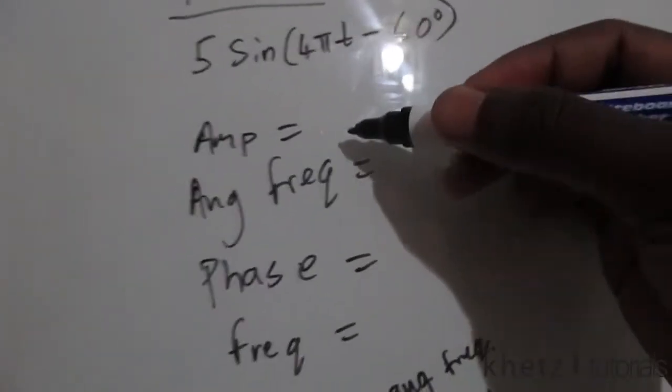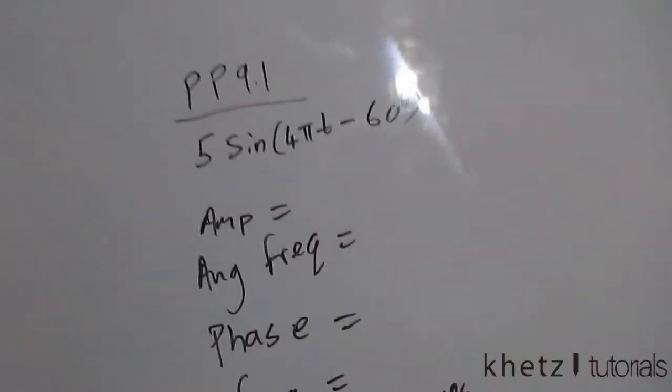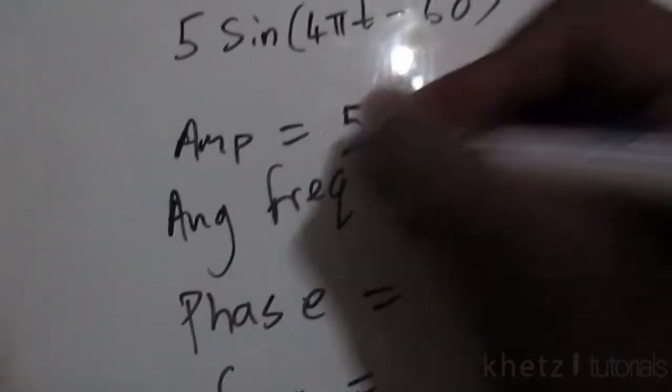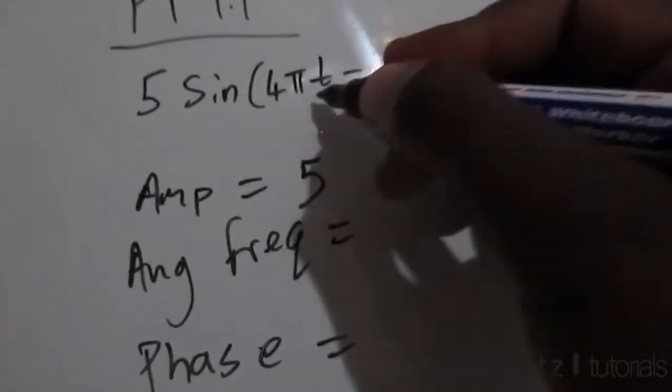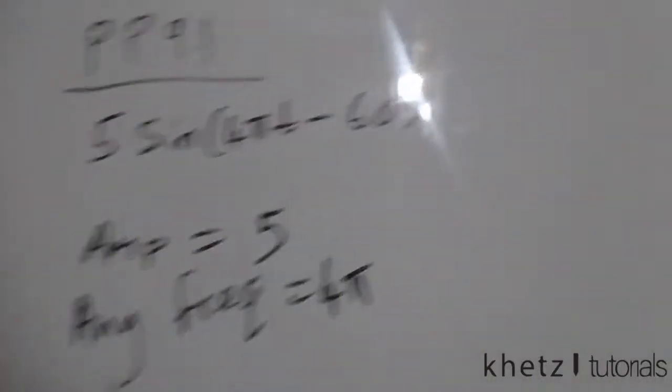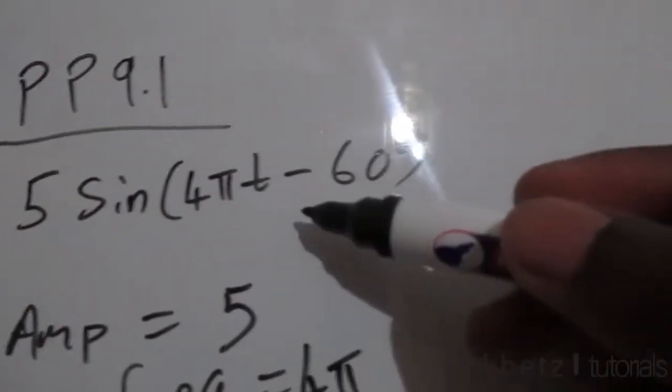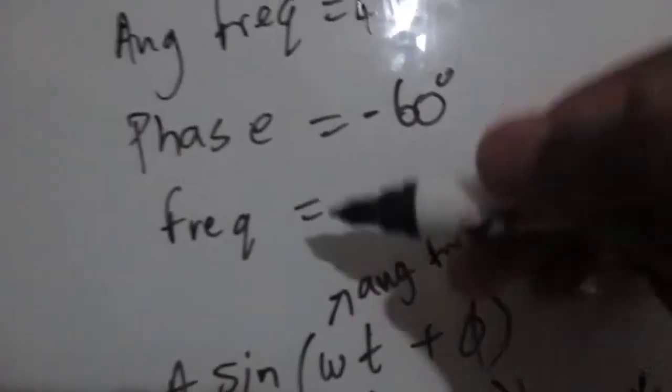So let's go back to the question. We are asked to find amplitude, so this corresponds with this A over here, and therefore the amplitude is five. The angular frequency which is found before this t, we're given this as four pi. And the phase is negative 60. Looking at the general form of the sinusoid, we take this sign so it's going to be negative 60 degrees. And finally the frequency.